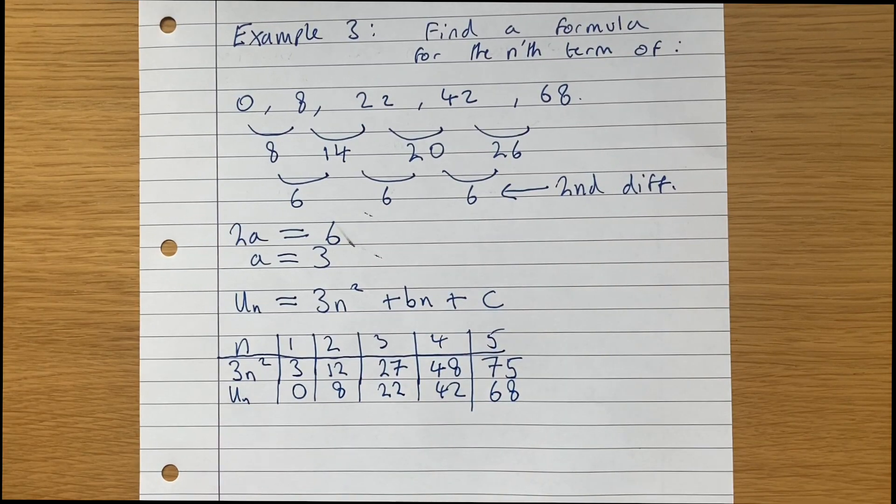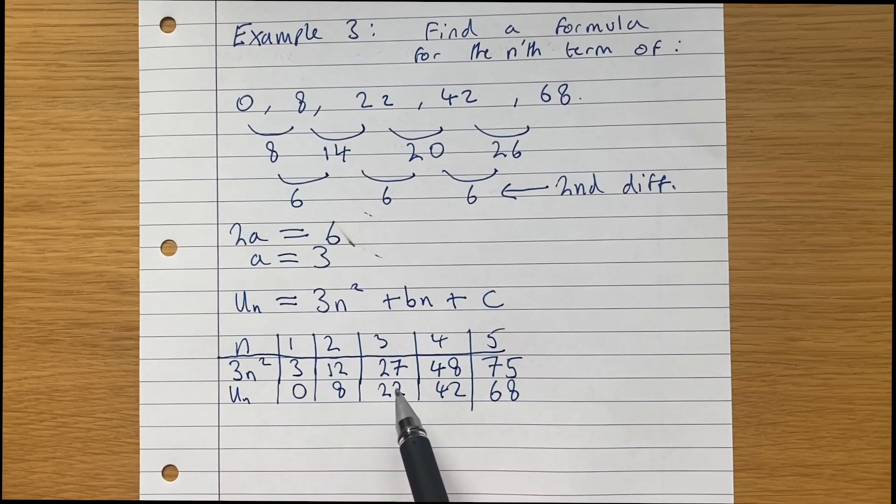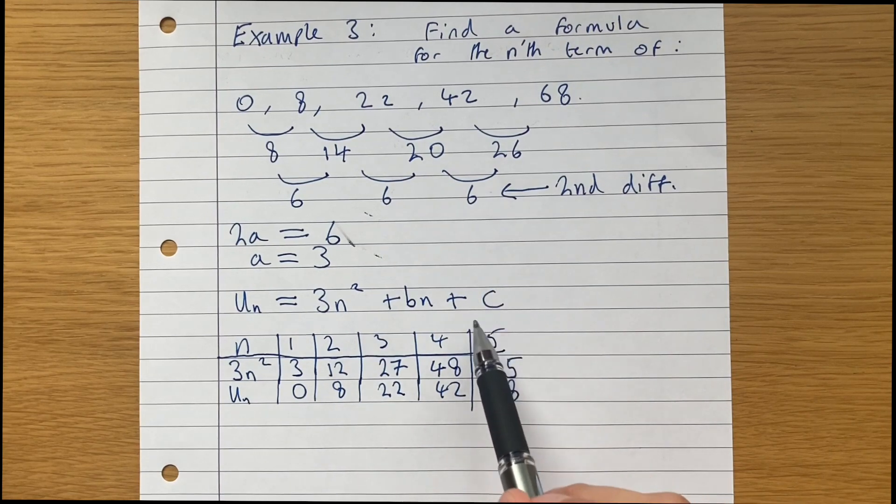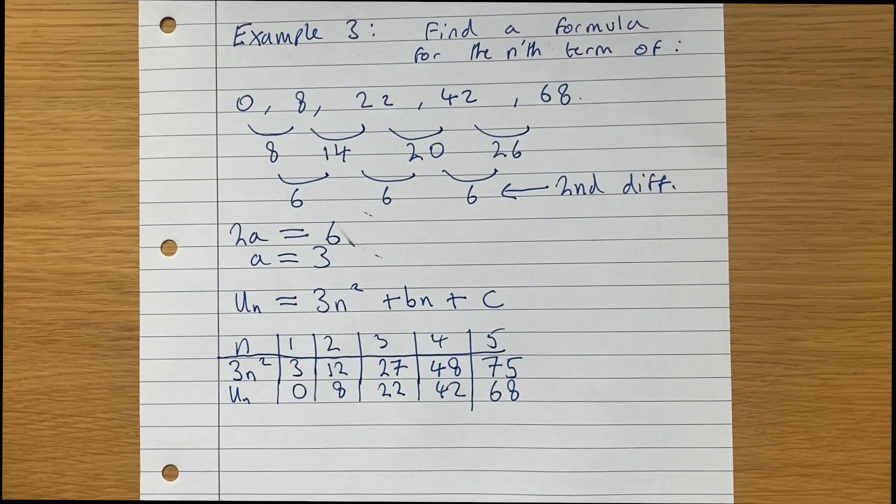But what we notice here is that there's no common difference between the terms, because the difference here is 3, here is 4, here is 5, here is 6, and here is 7. So we can't just add on a value c to get our answer. This means we're also going to have to calculate the value of b.